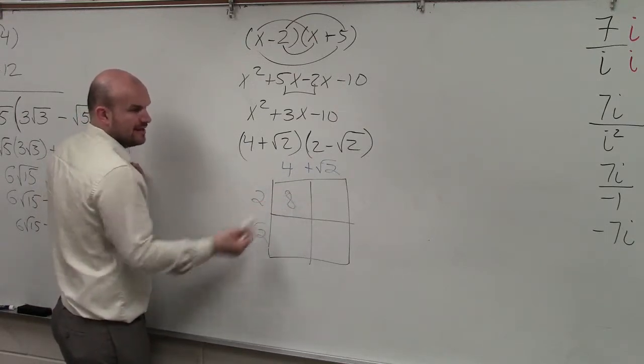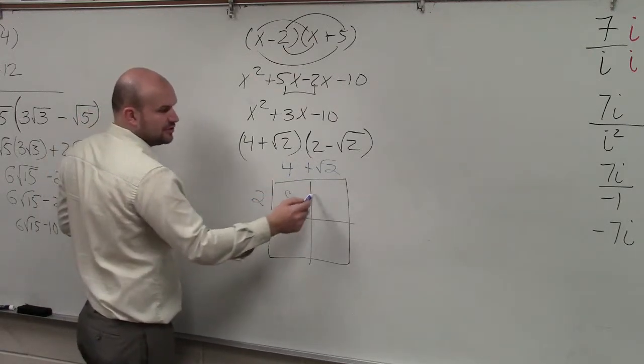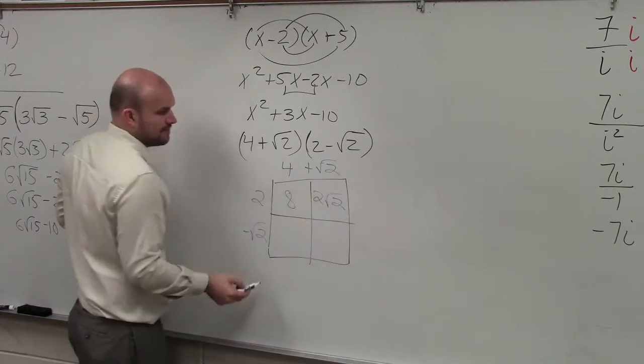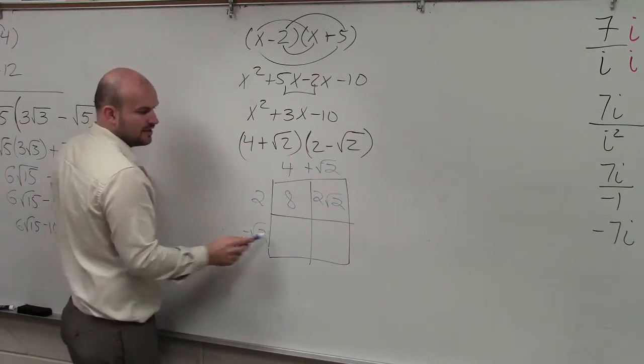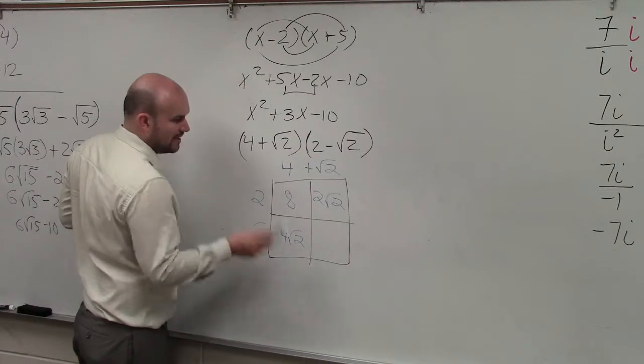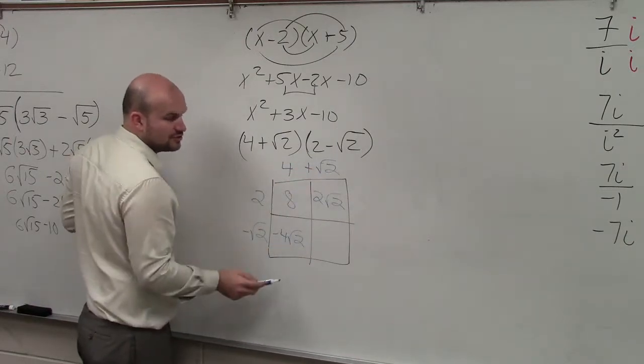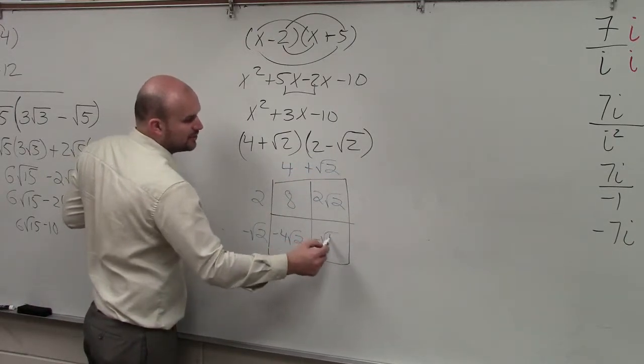2 times 4 is 8. 2 times square root of 2 is 2 square root of 2. 4 times negative square root of 2 is negative 4 square root of 2. And negative square root of 2 times square root of 2 is negative square root of 4.